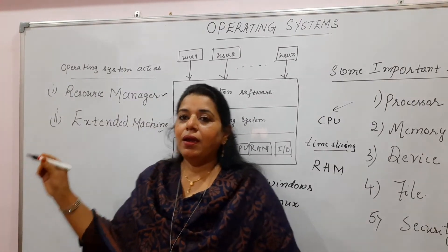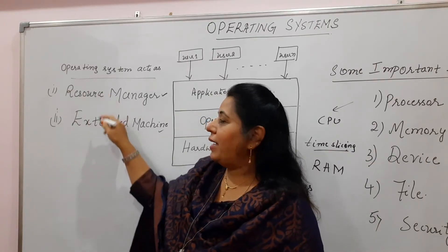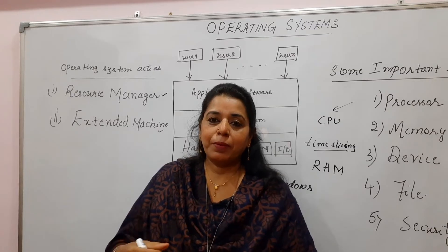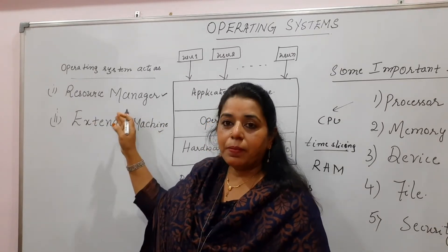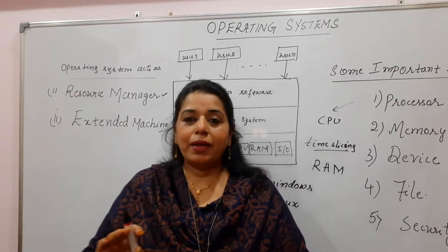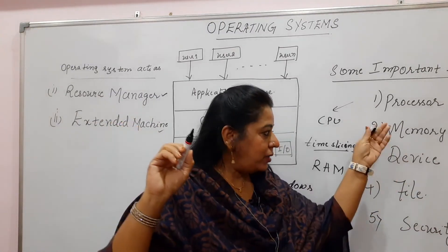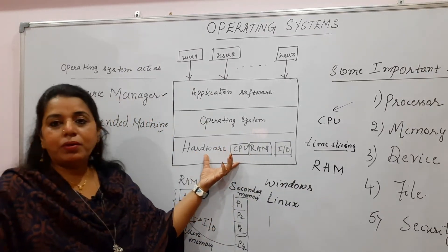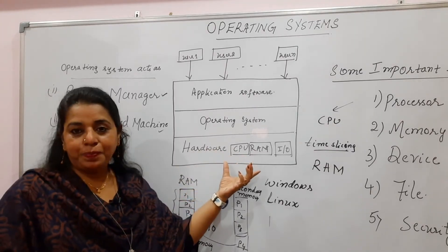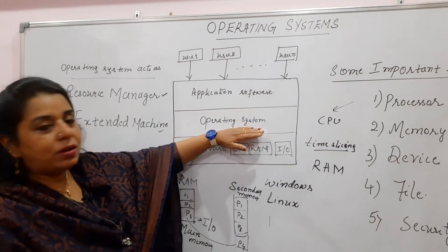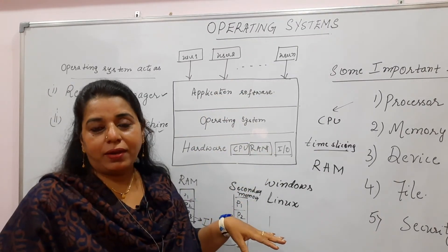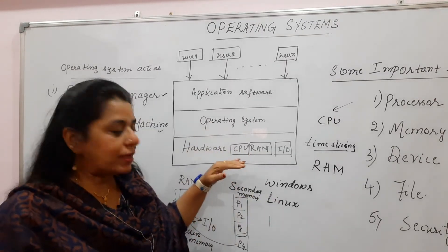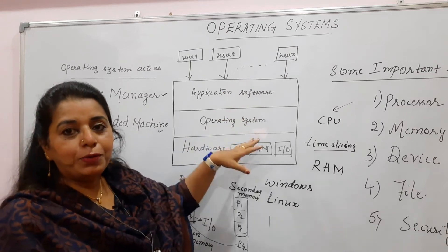That is why we say these are the different resources, and security is an important activity carried out by the operating system — we call this acting as a resource manager. The operating system also acts as an extended machine. In one of the textbooks and in previous question papers, they asked you to justify these two statements. When the operating system is not there, users are required to access the hardware directly, which is highly difficult. This is like some ugly interface, and the operating system is converting this ugly interface into a beautiful interface for the user.